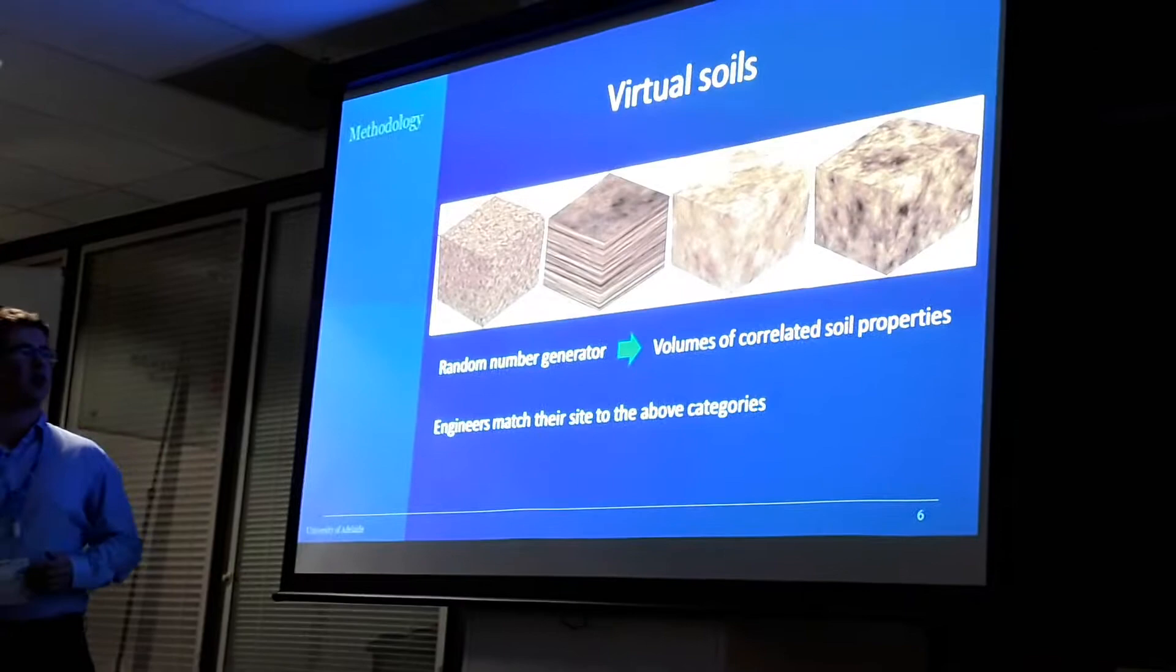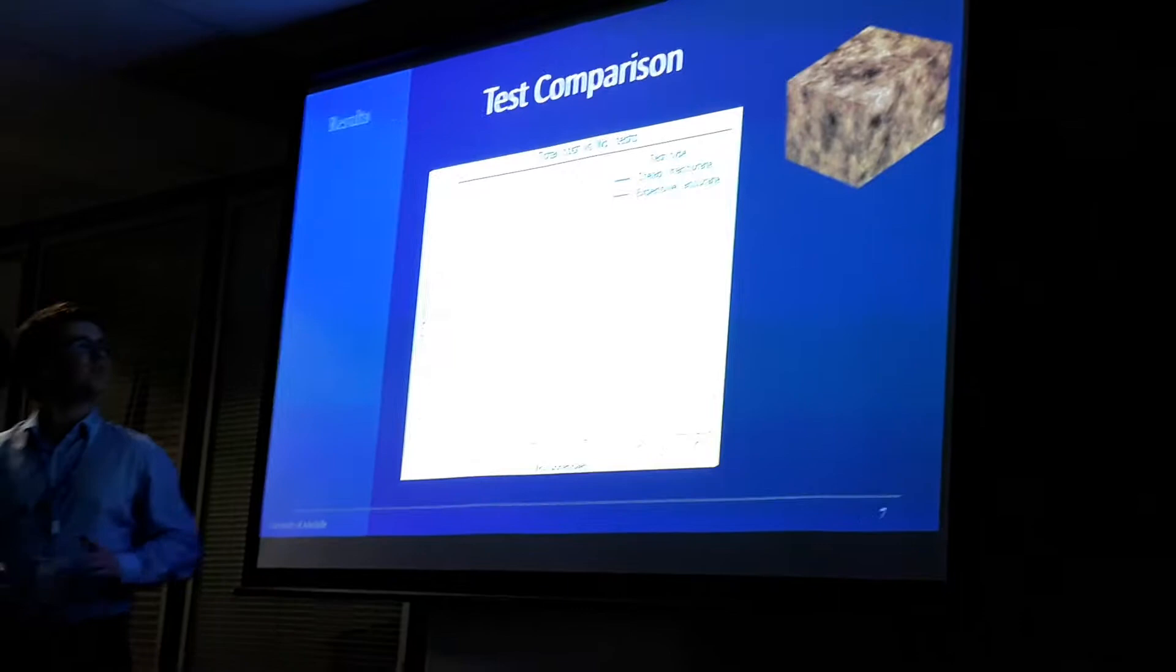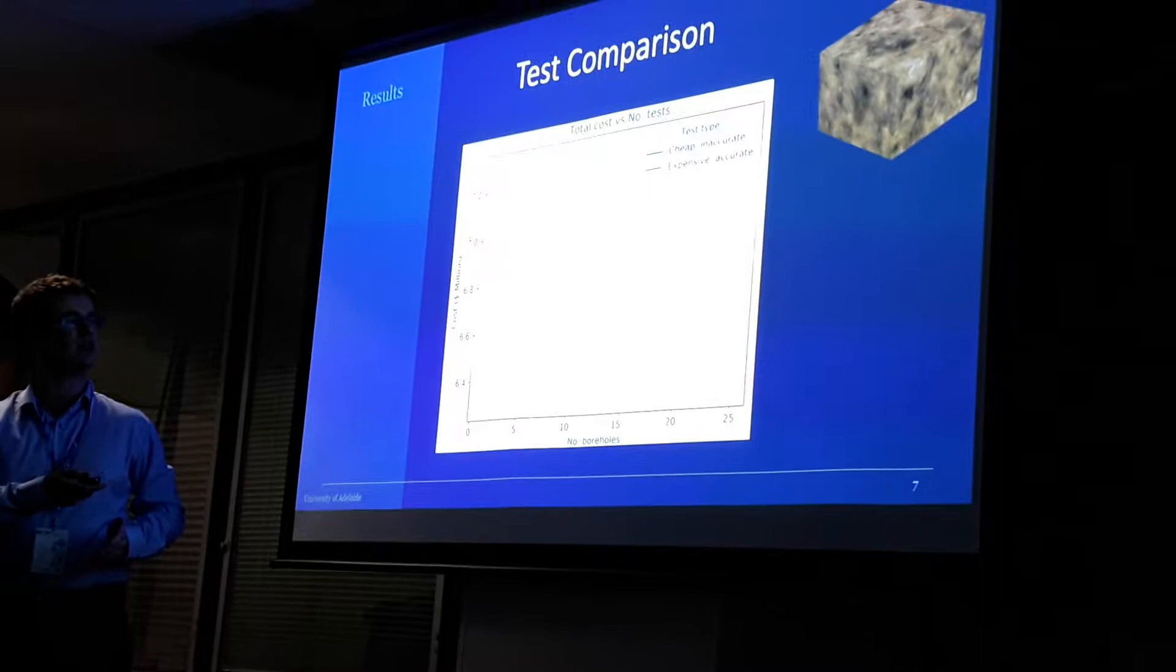So, let's look at one example of my results of two different types of common tests in civil engineering. One that's cheap and inaccurate. One that's expensive, but relatively accurate. And if you plot them both up, immediately there are two conclusions.